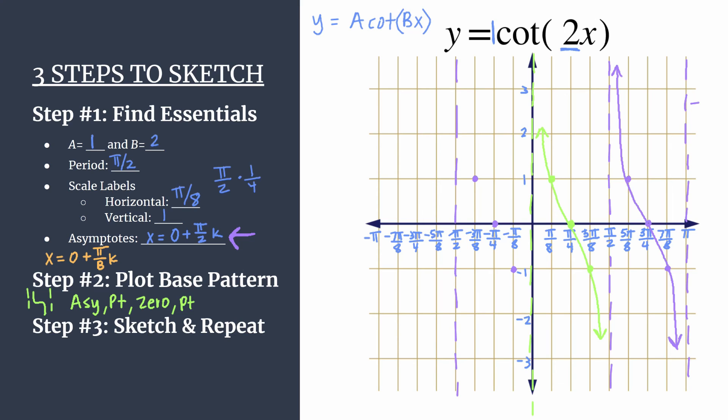Or sometimes it's nice to count four tick marks over if you like working the pattern in the forward direction. So asymptote at negative pi, upper point, zero, lower point. Okay, let's sketch those curves in.